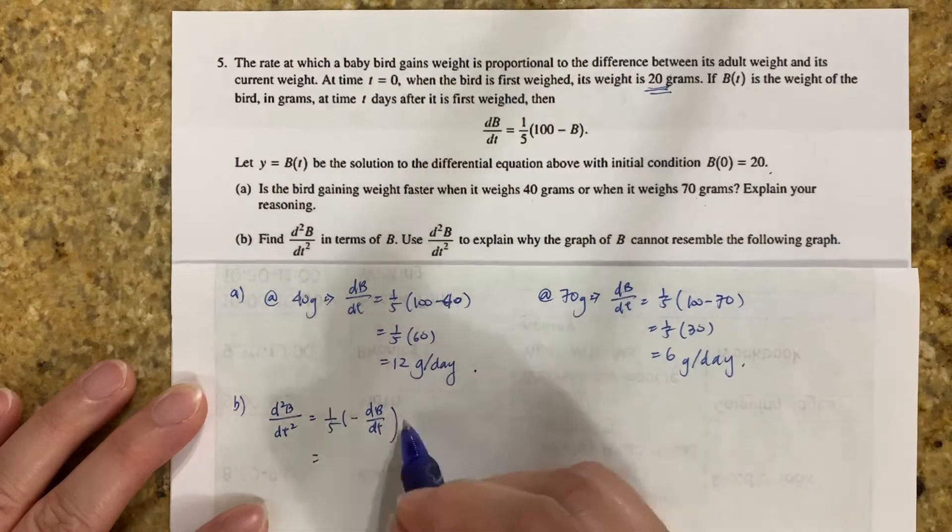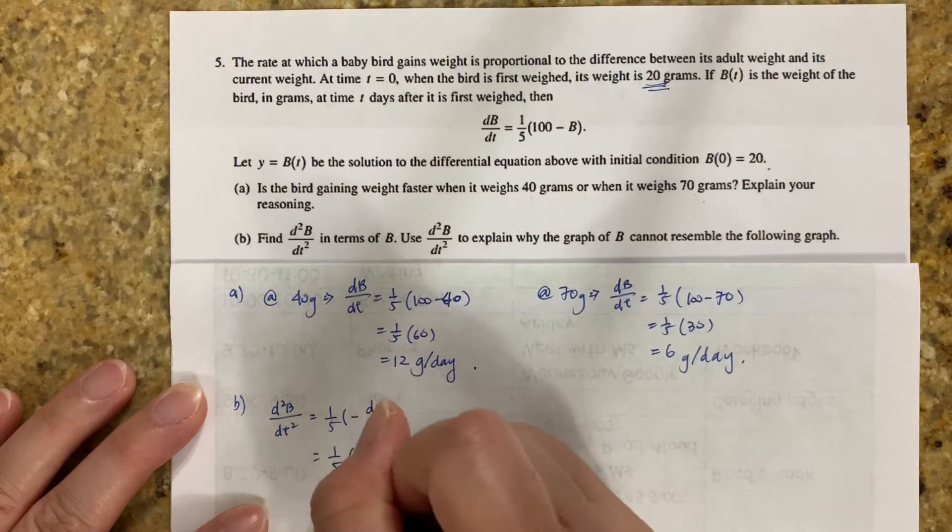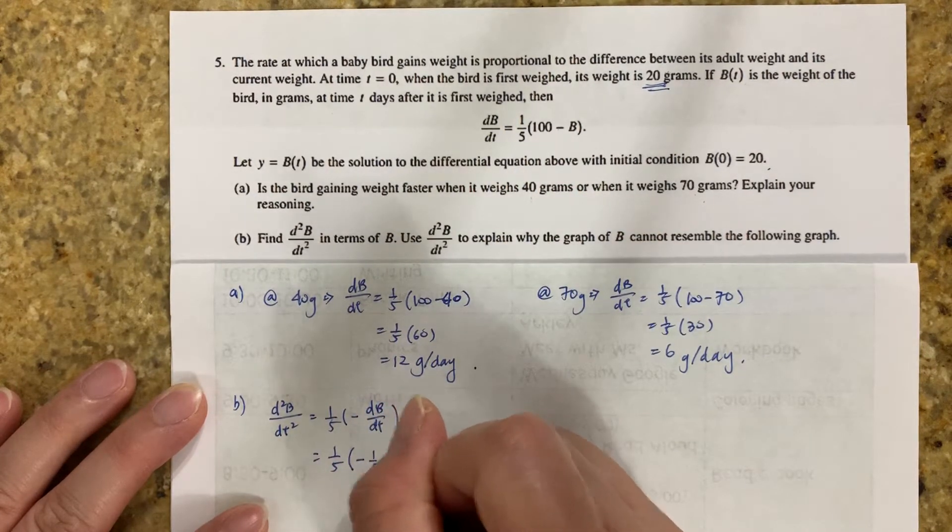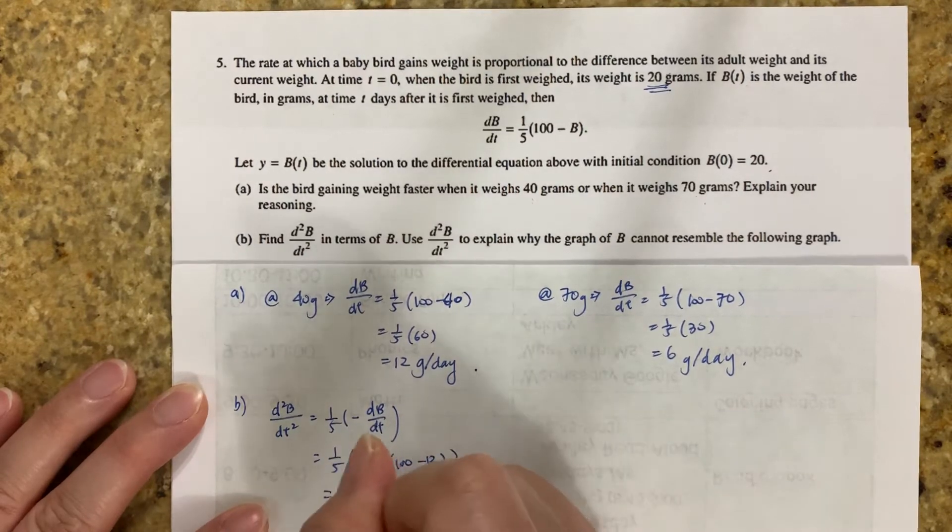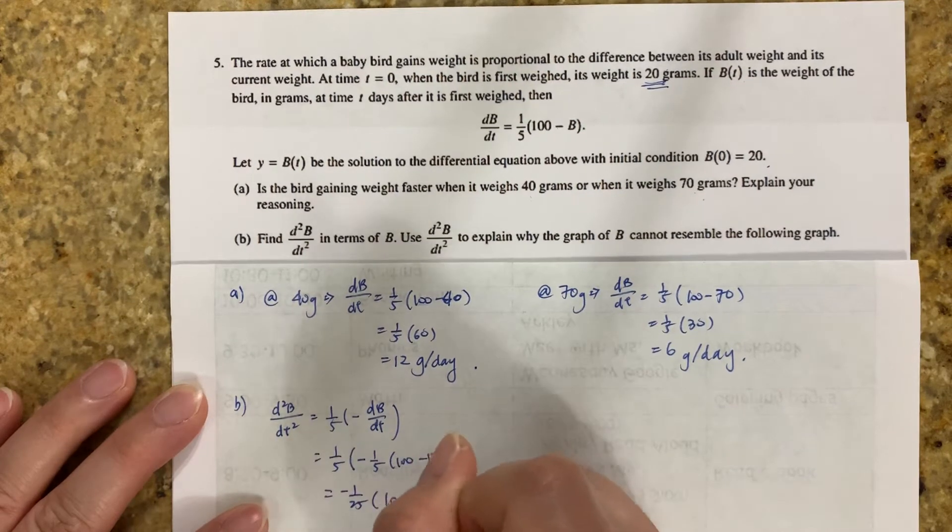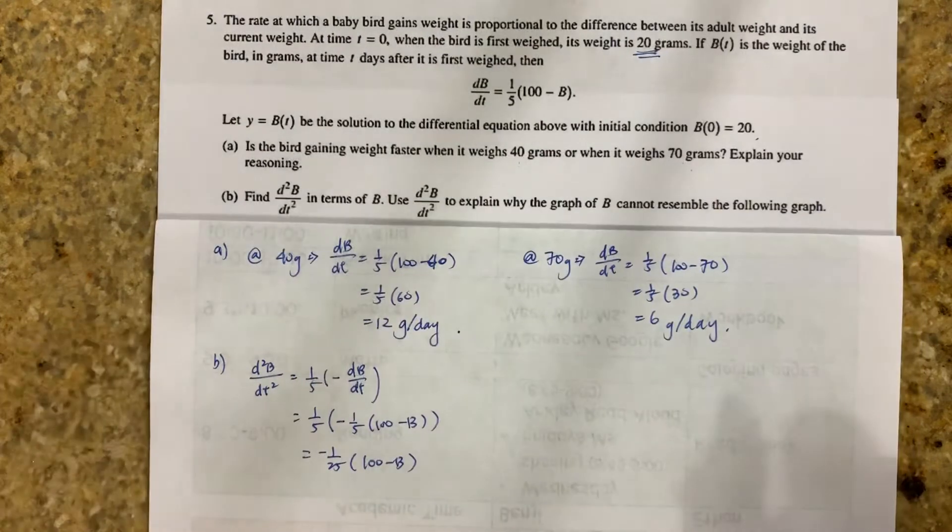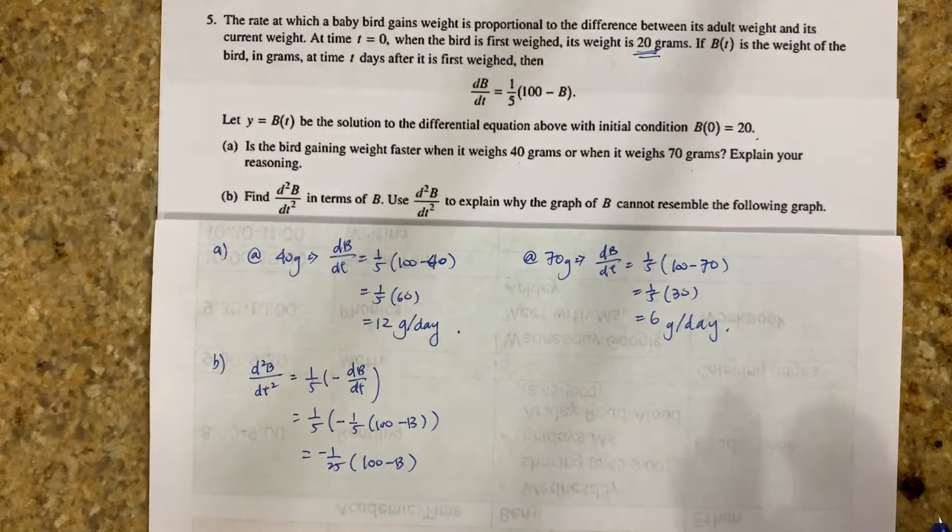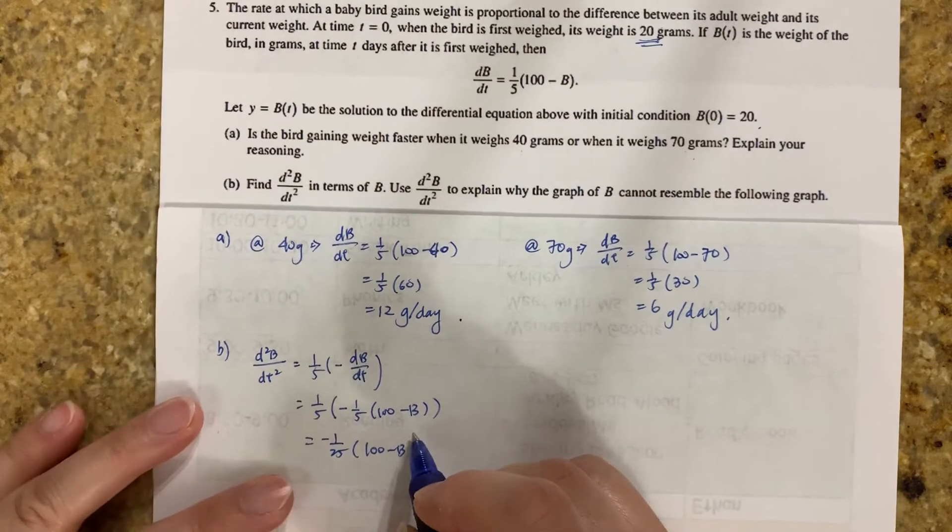And we know db over dt is this. So it's really 1/5 times negative 1/5 times 100 minus b, which is negative 1/25 times 100 minus b. And this is, remember when we kind of did the implicit differentiation where you plug your derivative back into your second derivative.